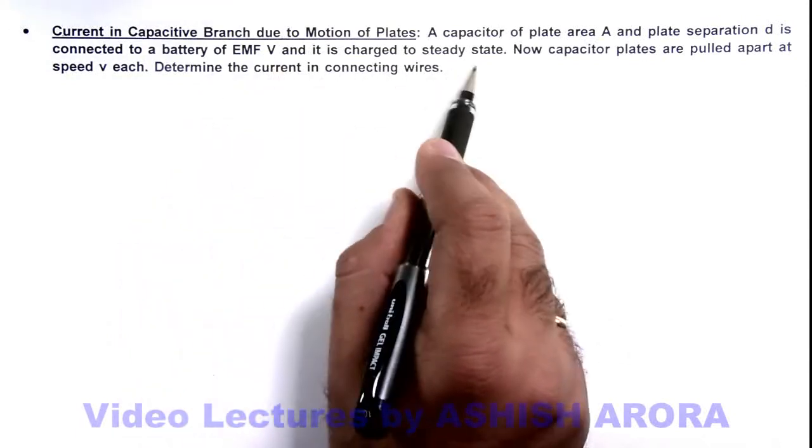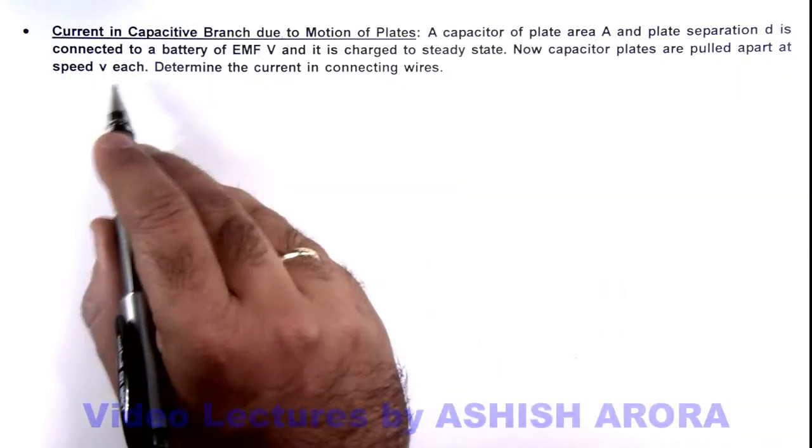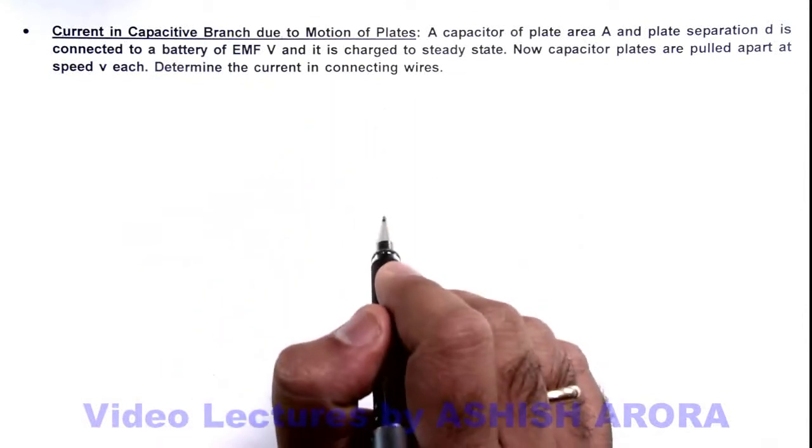And it is charged to steady state. Now capacitor plates are pulled apart at speed v each, and we are required to find the current in connecting wires.